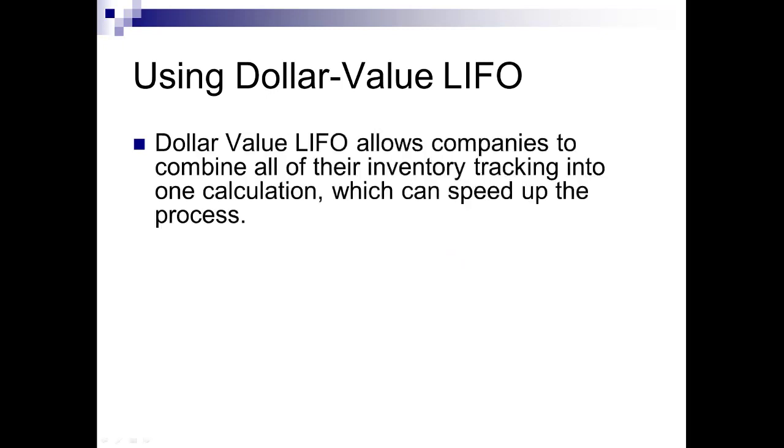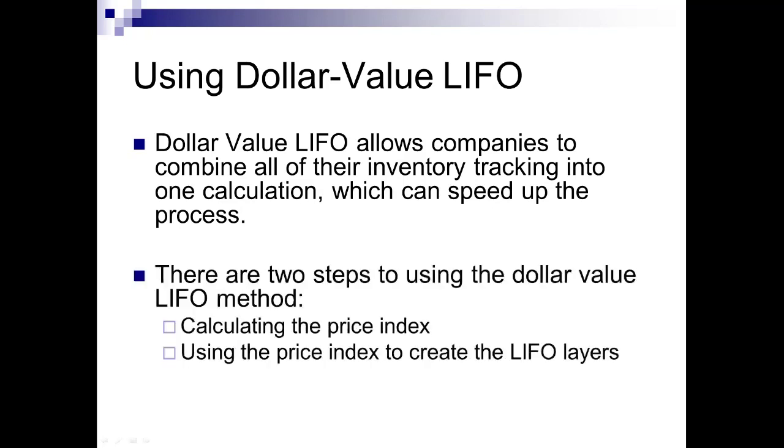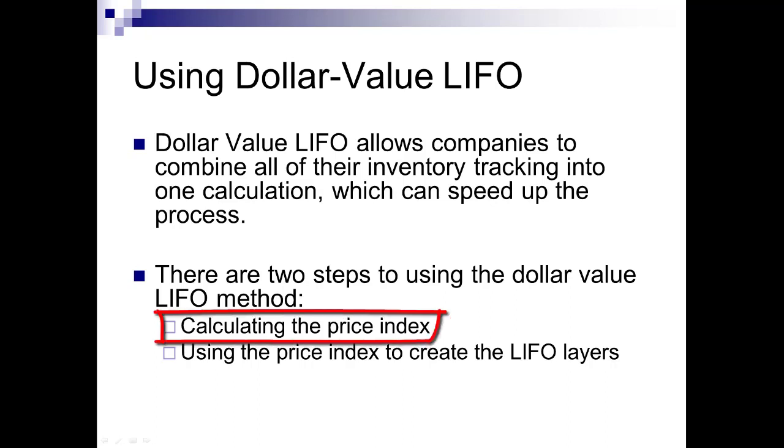So let's take a look at the dollar value LIFO method, what it does and how it works. Basically, dollar value LIFO allows companies to combine all of their inventory into one big calculation instead of trying to go through and keep track of every single item. We're basically going to do one quick equation at the very end and add or subtract that from what we had last period. There's really just two steps to this process.